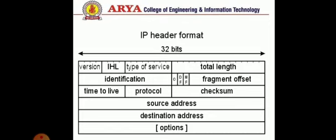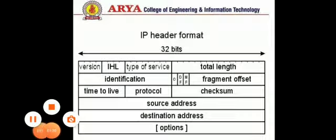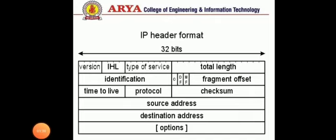The header of an IP datagram contains many fields: version, IP header length, type of service, total length, identification, flags, fragment offset, time to live, protocol, checksum, source address, destination address, options, and padding. The header is 20 to 40 bytes, and the rest of the bytes are contained by data only.